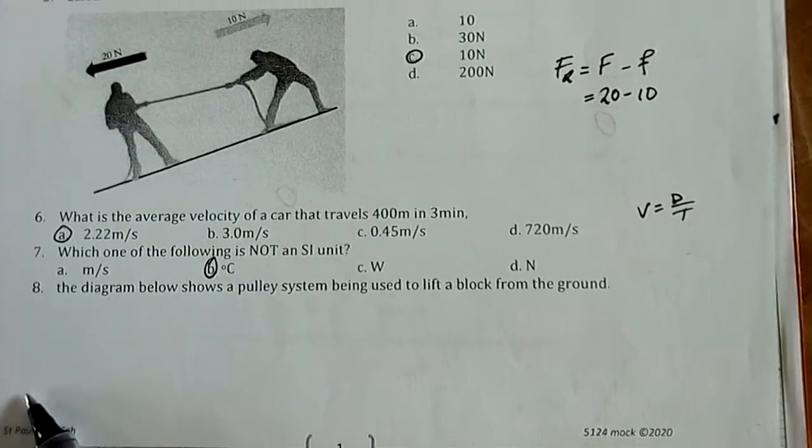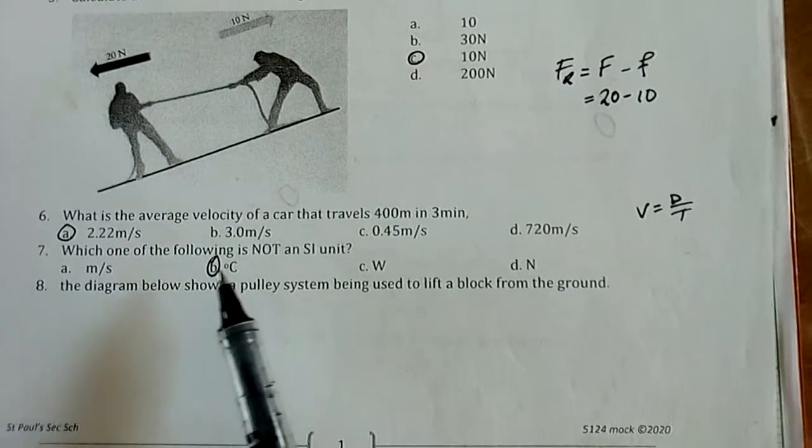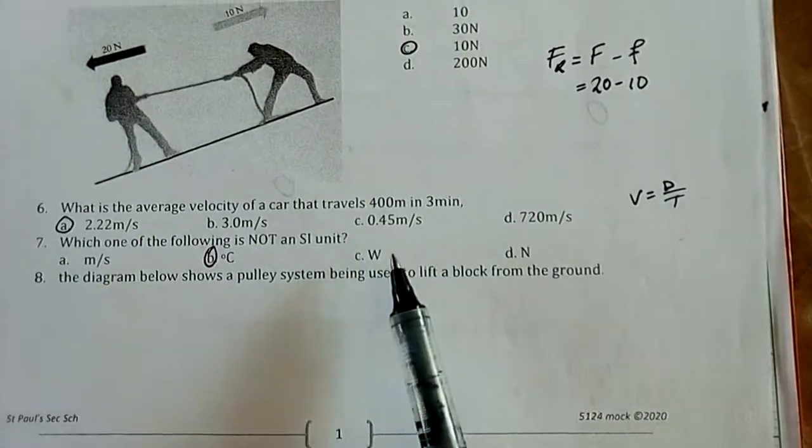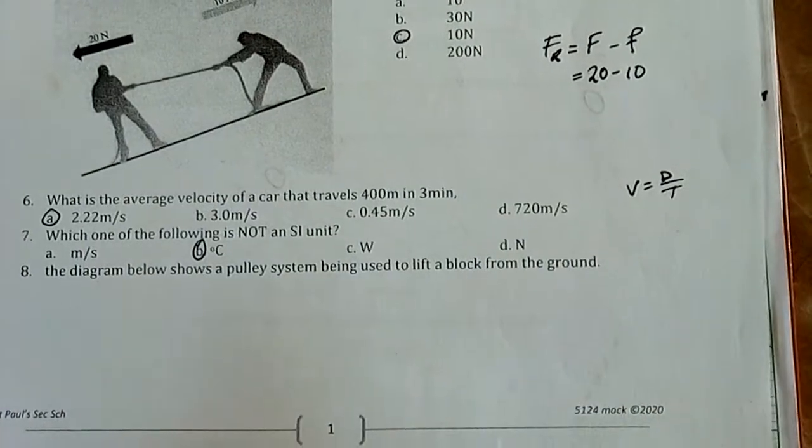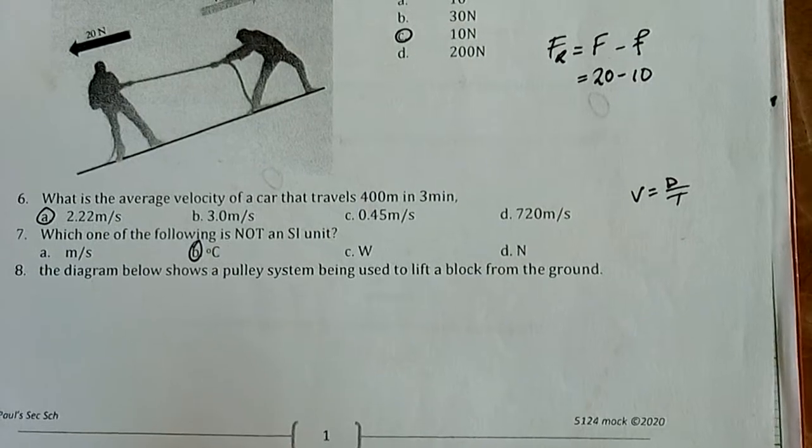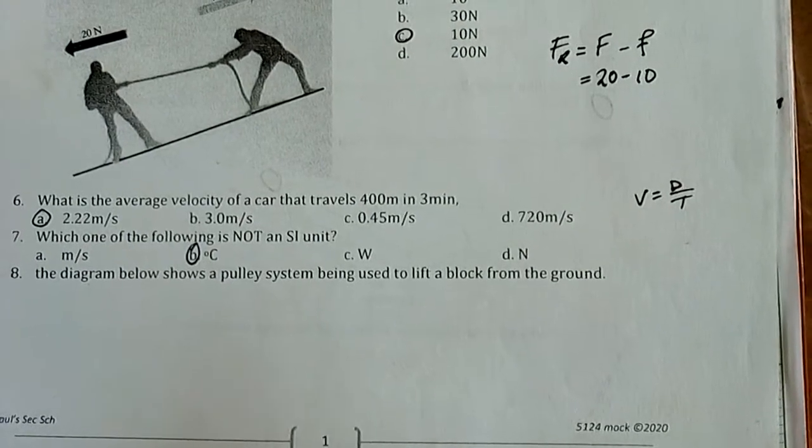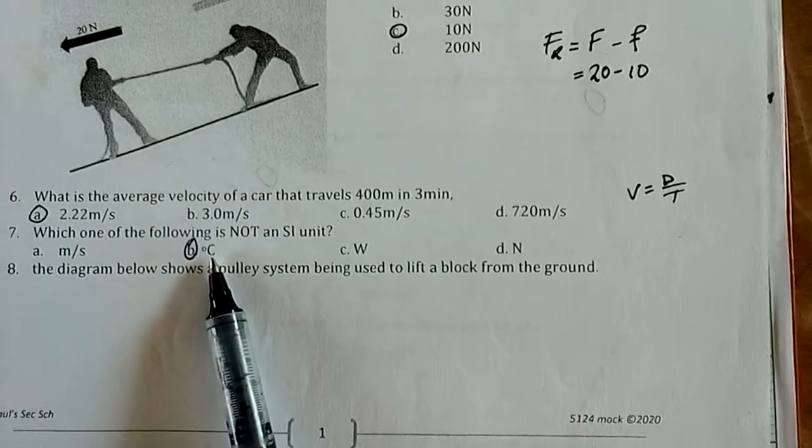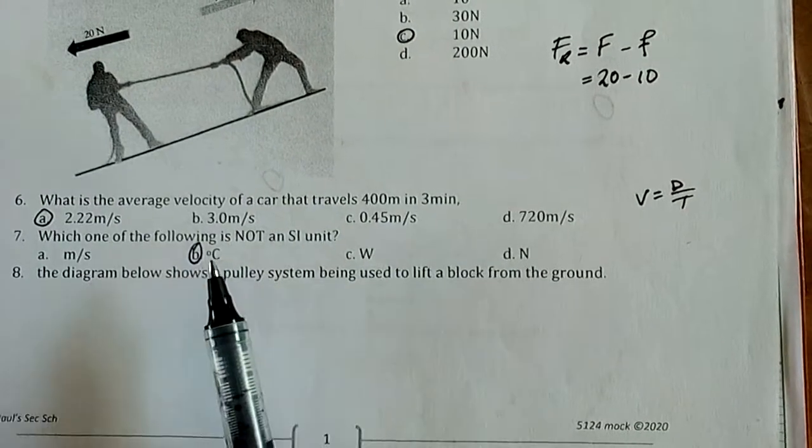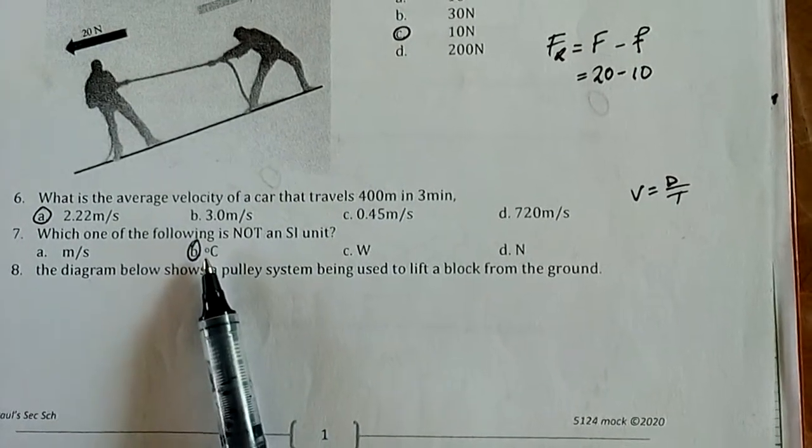Number 7: Which one of the following is not an SI unit? Our answer is degrees Celsius. Meters per second, watt, and newton are all SI units, but they are not base units—they are derived units from SI units. Degrees Celsius is not an SI unit because the SI unit for temperature is Kelvin. So our answer is B.